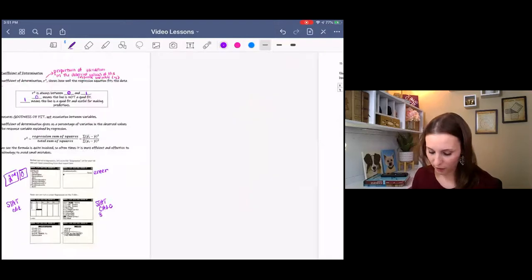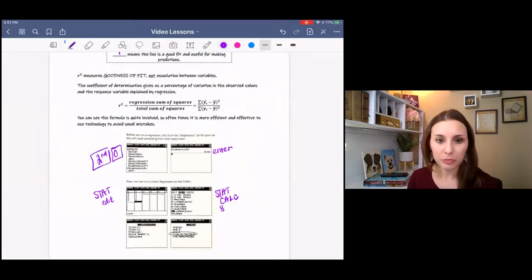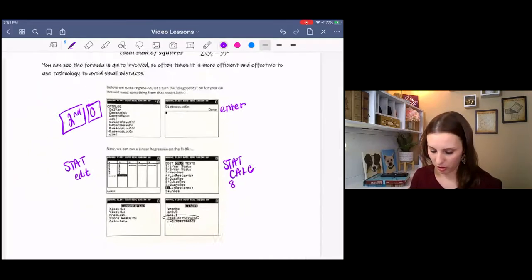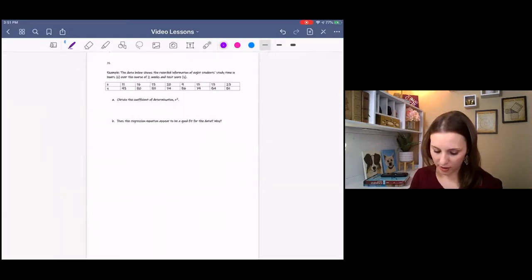You can also find this in Fathom, and I showed this in the linear regression equation video. That's where you input your data and then pull down model and drag over your variables and it'll give you r squared. So I have this example here.